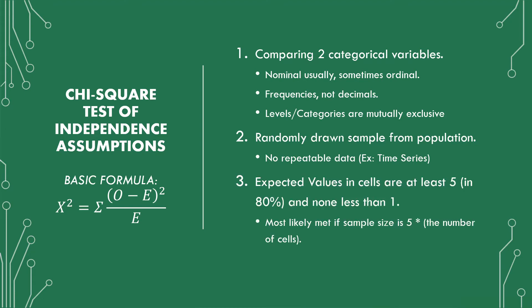The last assumption has to do with expected values in the cells. At least 80% of them have to have at least five as the expected value, and none of them can have anything less than one. This is because it'll skew the test and you'll get a result that isn't representative of what you're actually looking at, since you failed one of the assumptions the test requires. To best satisfy this assumption, the general rule is that your sample size is simply greater than or equal to five times the number of cells you have.